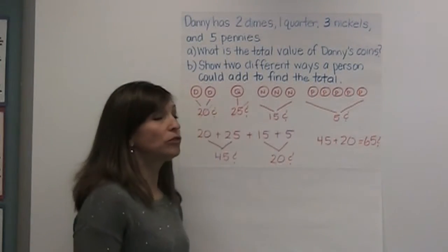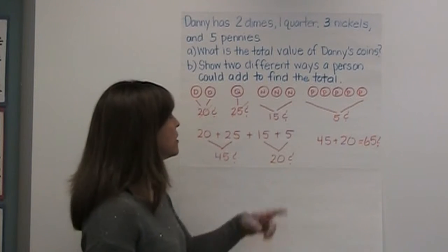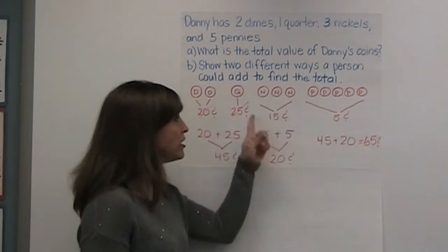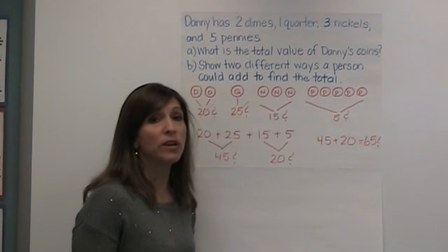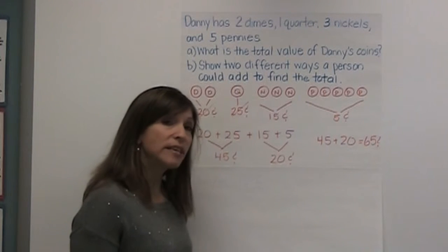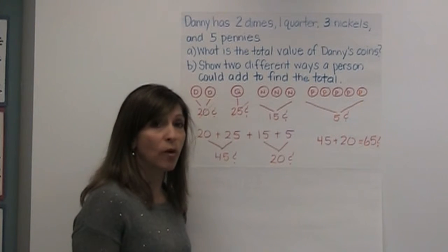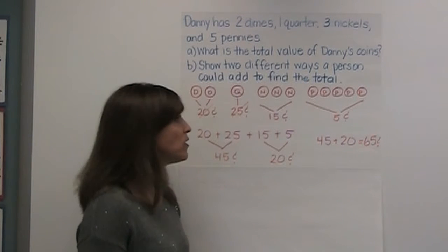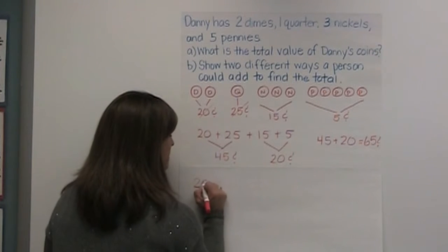Part B asks that we show two different ways a person could add to find the total. I showed one way already. For my second way, I'm going to use the arrow method. When I use the arrow method, I start with a coin with the highest value. The coin with the highest value here is my quarter, which is worth twenty-five cents.